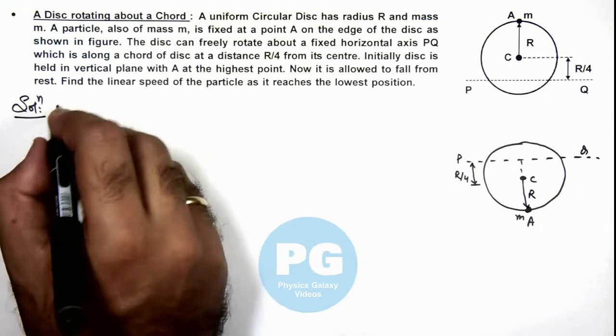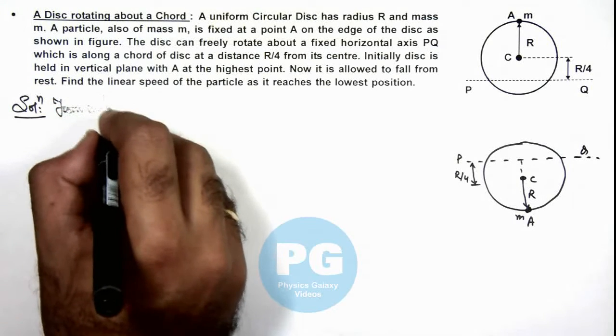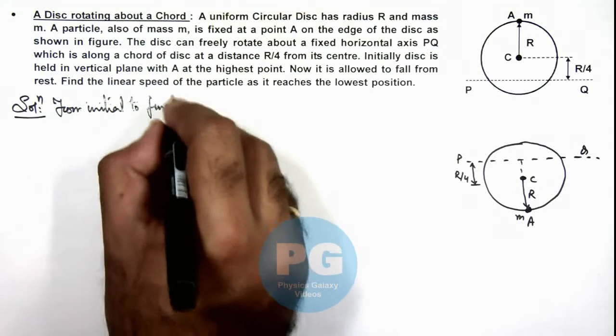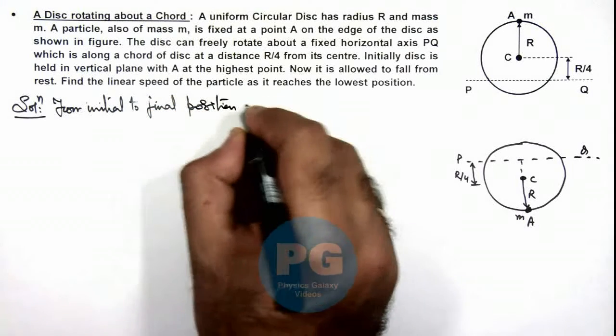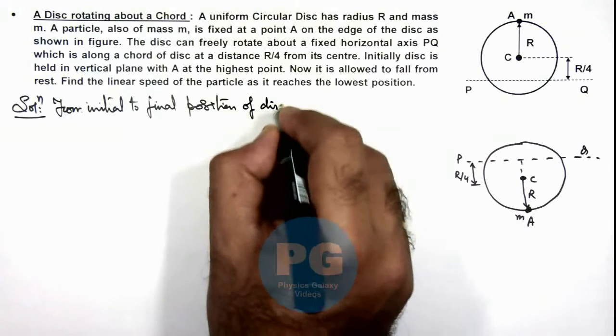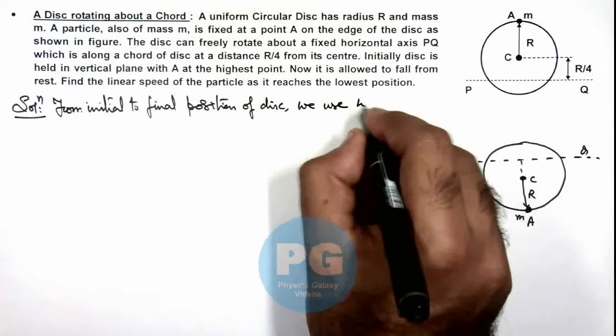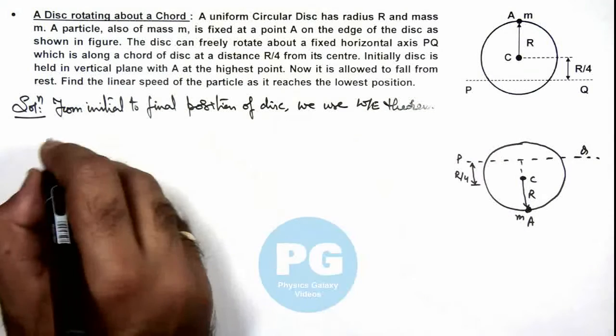So here we can say from initial to final position of disc, we use work energy theorem. Here we can see initial kinetic energy of the disc was zero.